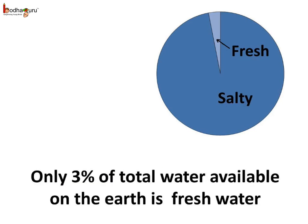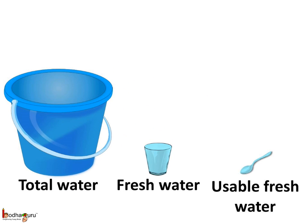Only around 3% of the total water available on earth is usable fresh water. The rest is saline — salty water — unusable without treatment. If this bucket represents all the water on earth, then the glass represents the 3% fresh water available. But almost 2.997% of that is trapped in ice caps, glaciers, and deep underground. So only 0.03% of all water is directly available to us as fresh water.